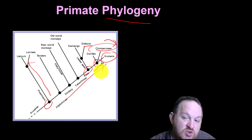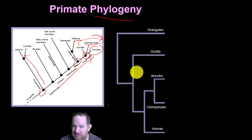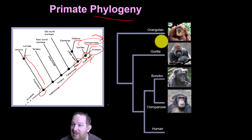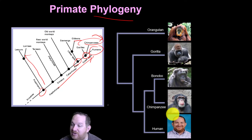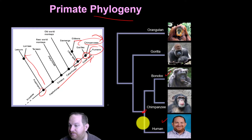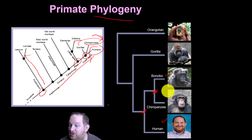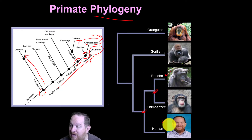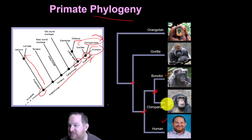Another way to show this is with a different-looking tree. This kind of shows the primate phylogeny: orangutans, gorillas, bonobos, chimpanzees, humans. Notice that we share a common ancestor. A bonobo and a chimpanzee share a more recent common ancestor than a human. So a bonobo and a chimpanzee are more closely related than a bonobo and a human. If you go back further, yes, I share an ancestor with a gorilla, but I'm more closely related to the bonobo and chimpanzee.